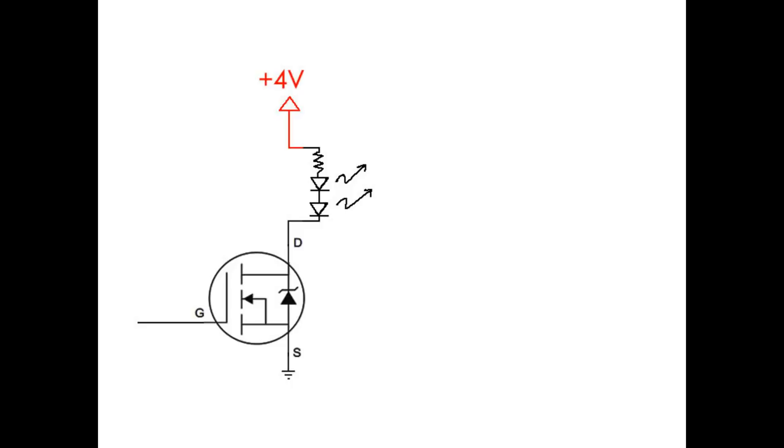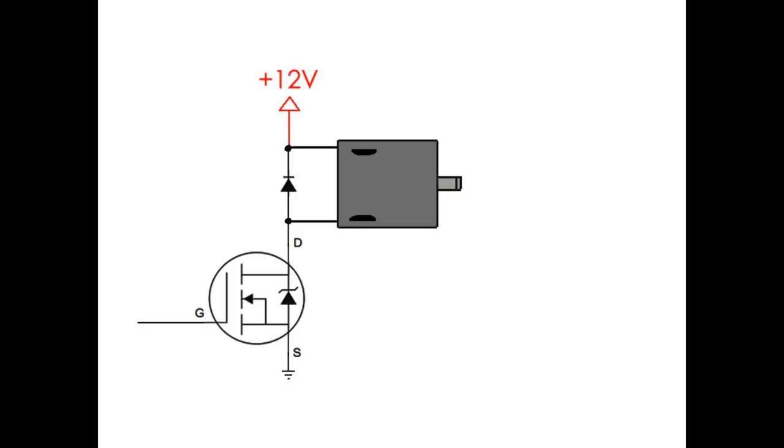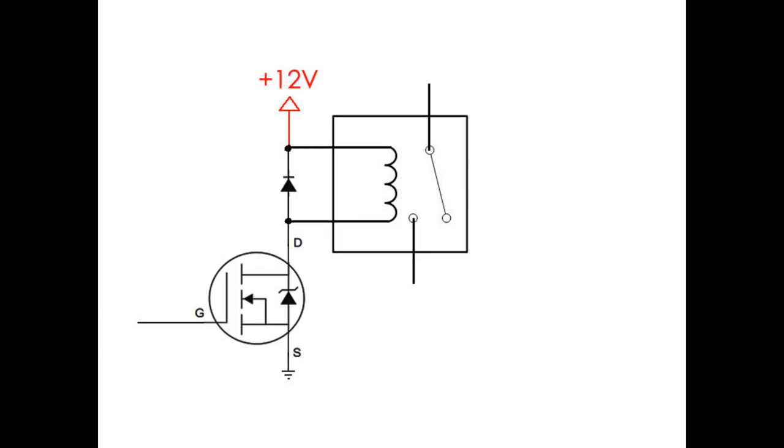So, I could switch LEDs on and off, I could switch a string of low voltage Christmas lights on and off. If you add a diode over here, you can switch a motor on and off, switch a solenoid on and off, or switch a relay on and off.